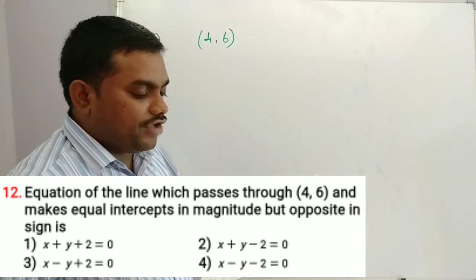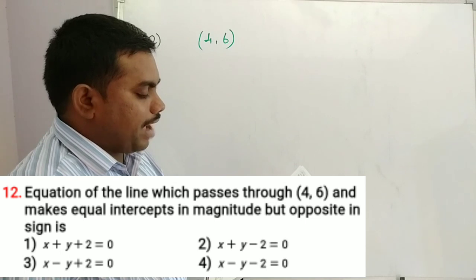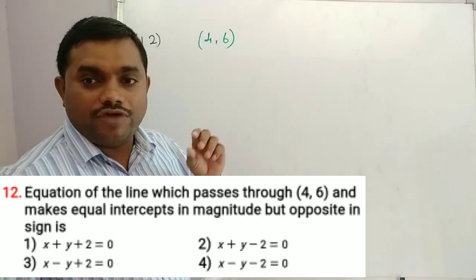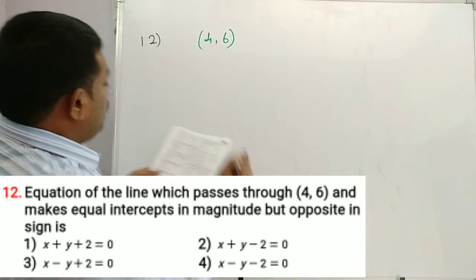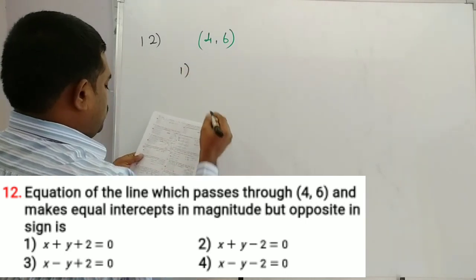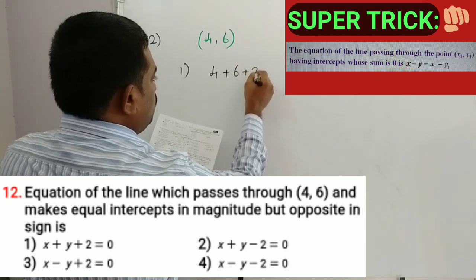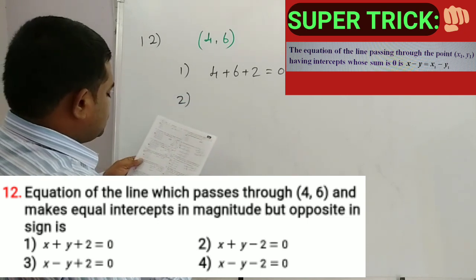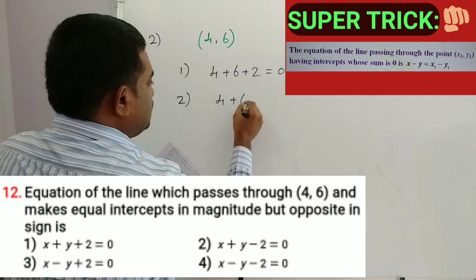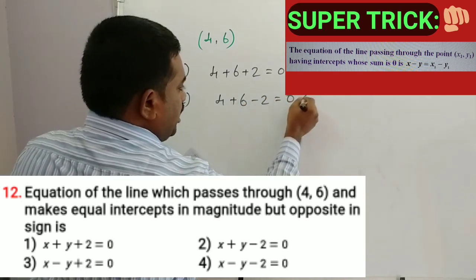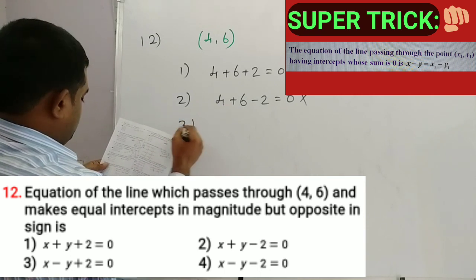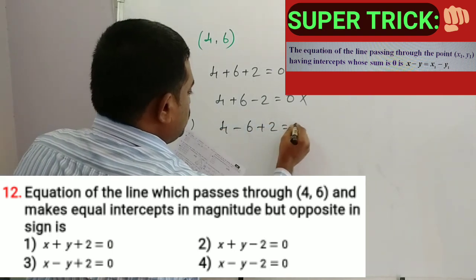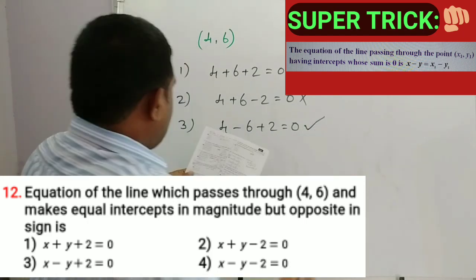Question 12: The equation of the line passing through (4, 6) making equal intercepts in magnitude but opposite in sign. Using option verification by substituting (4, 6): option 1 (x plus y plus 2 equals 0): 4 plus 6 plus 2, not satisfied. Option 2 (x plus y minus 2 equals 0): not satisfied. Option 3 (x minus y plus 2 equals 0): 4 minus 6 plus 2 equals 0, satisfied. Option 3 is the correct answer.